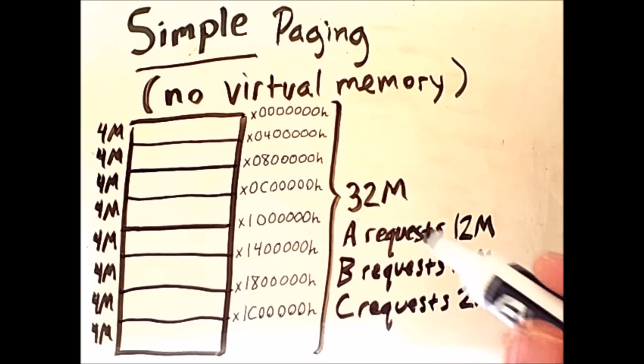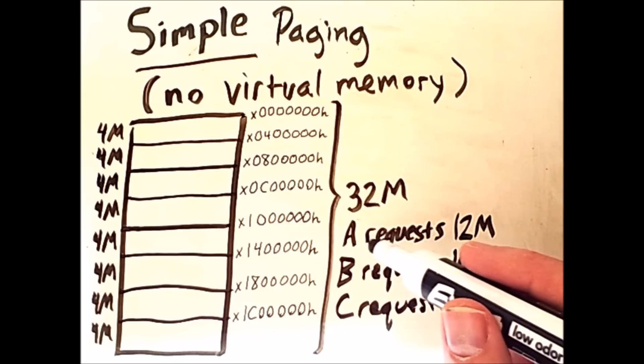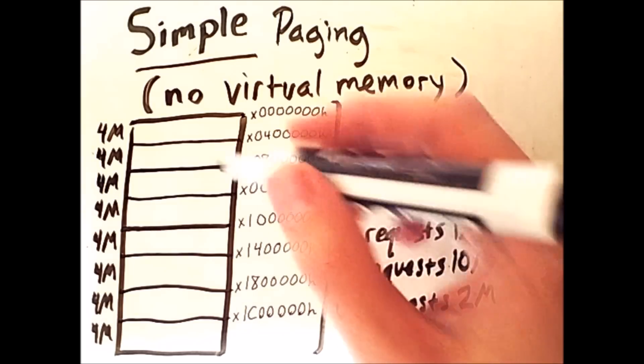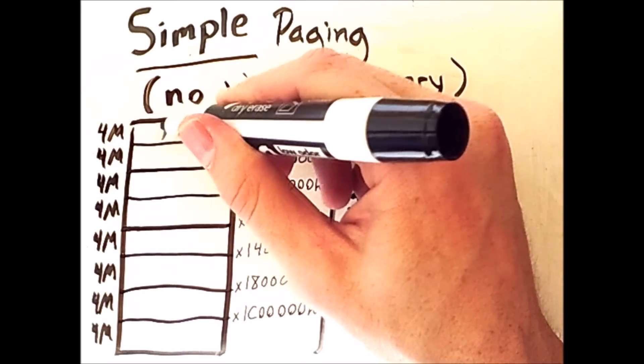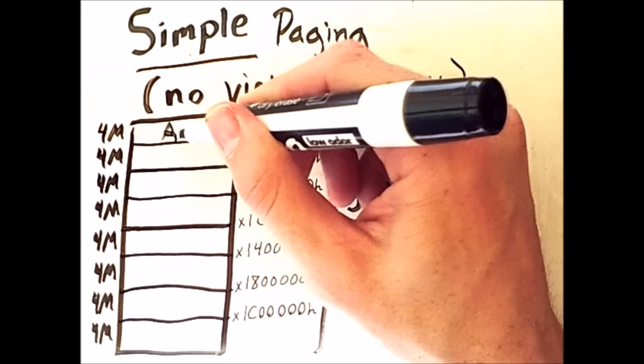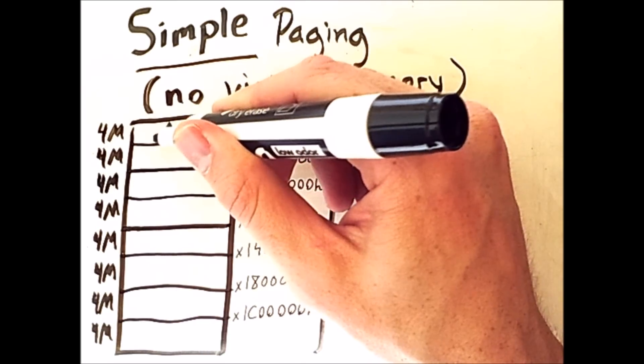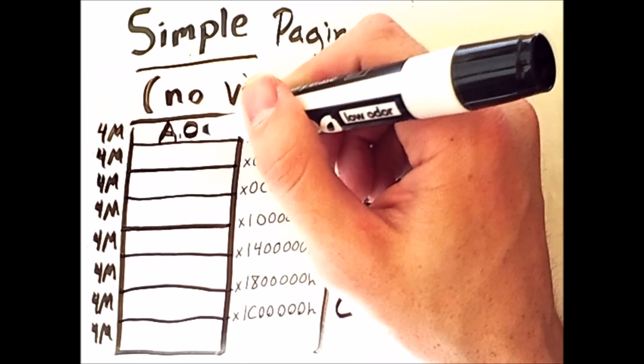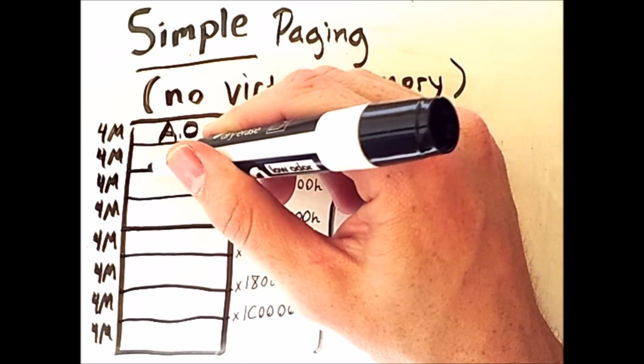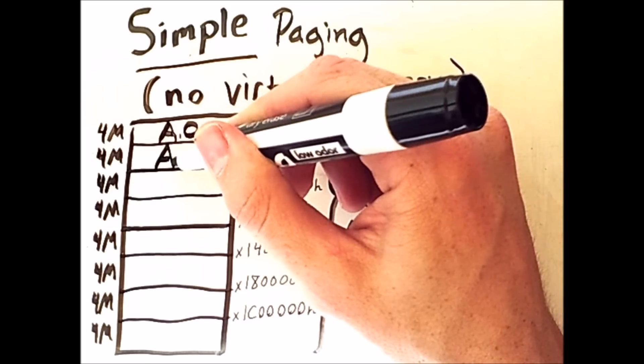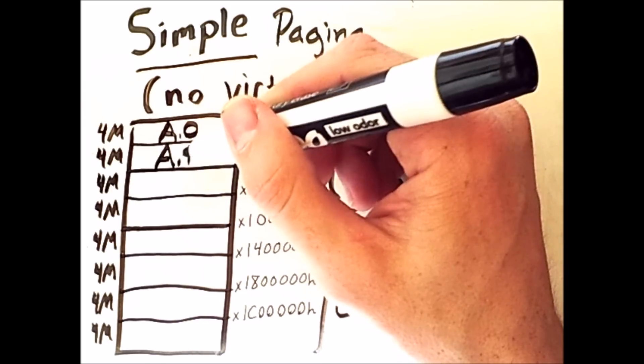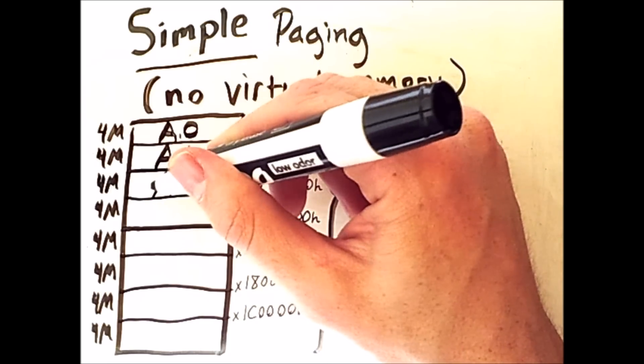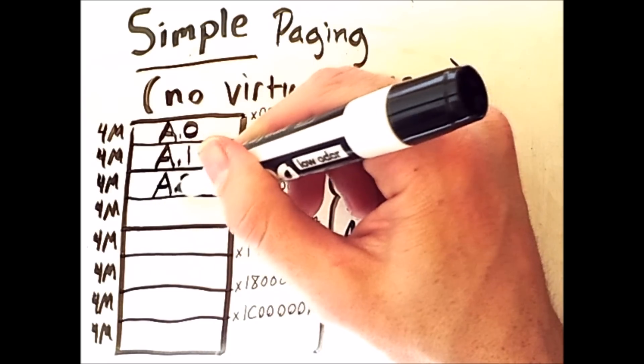A 12 megabyte request can be split into 3 4-megabyte chunks. So we will have a process A that is divided into 3 pages. The first page, which is page 0 of process A, will go in the first available frame in memory. The next page of process A, page 1, will go in the next frame, and the third page will go in the frame after that.